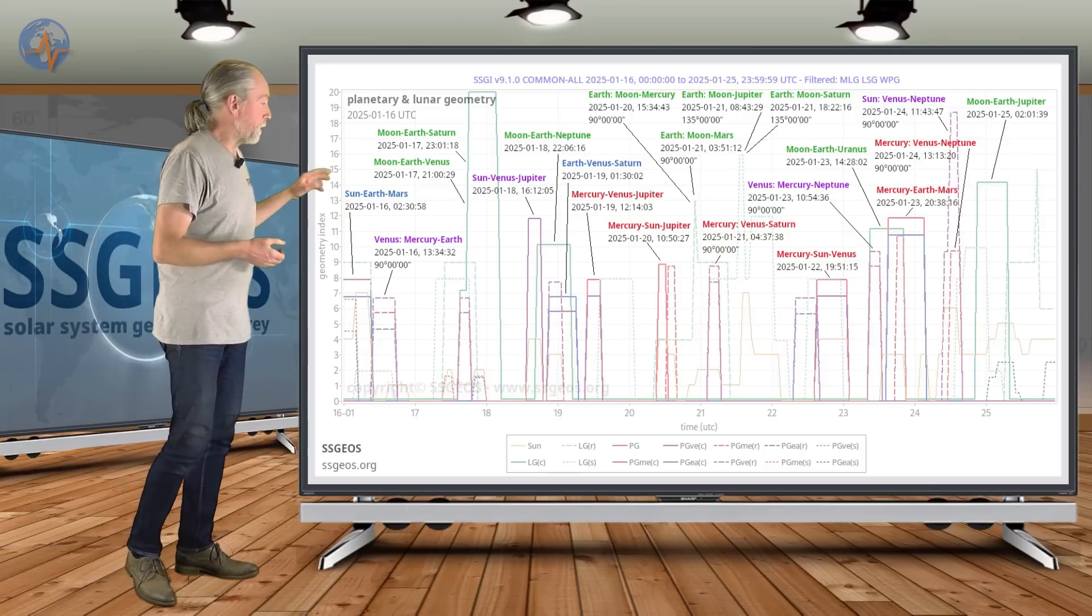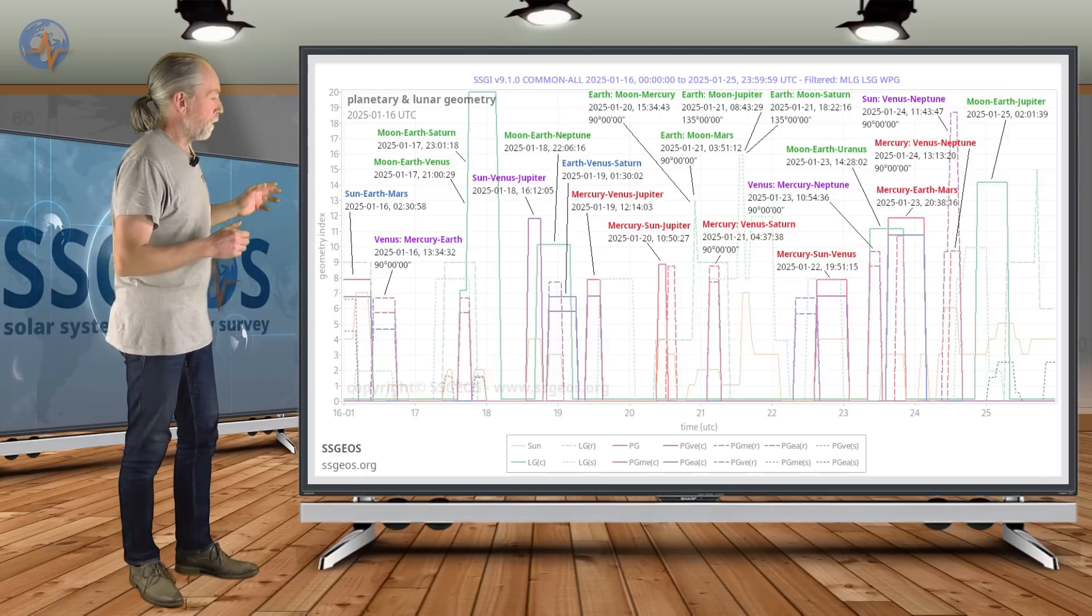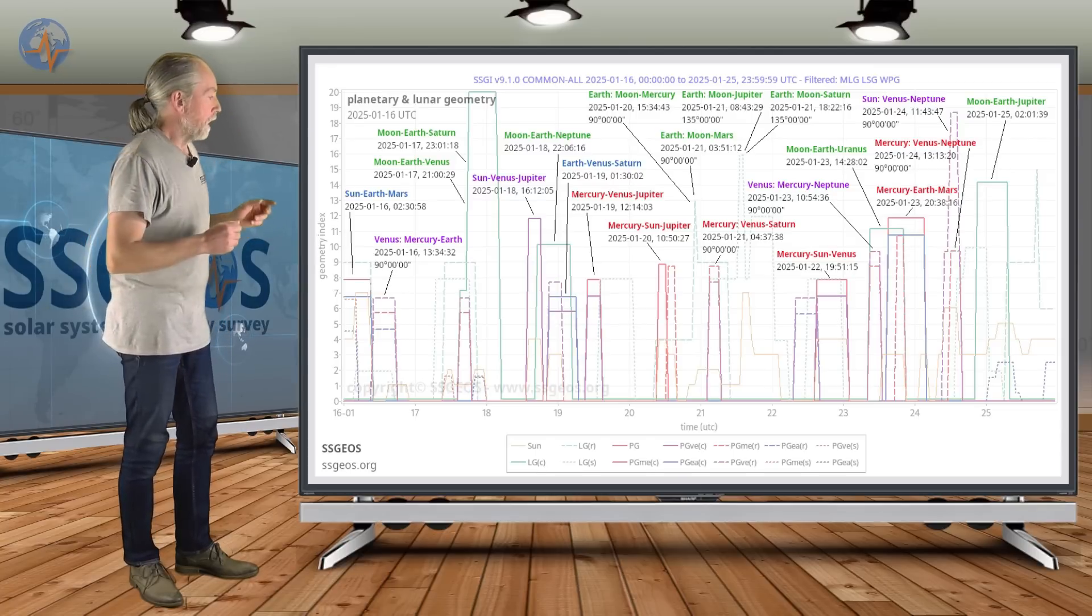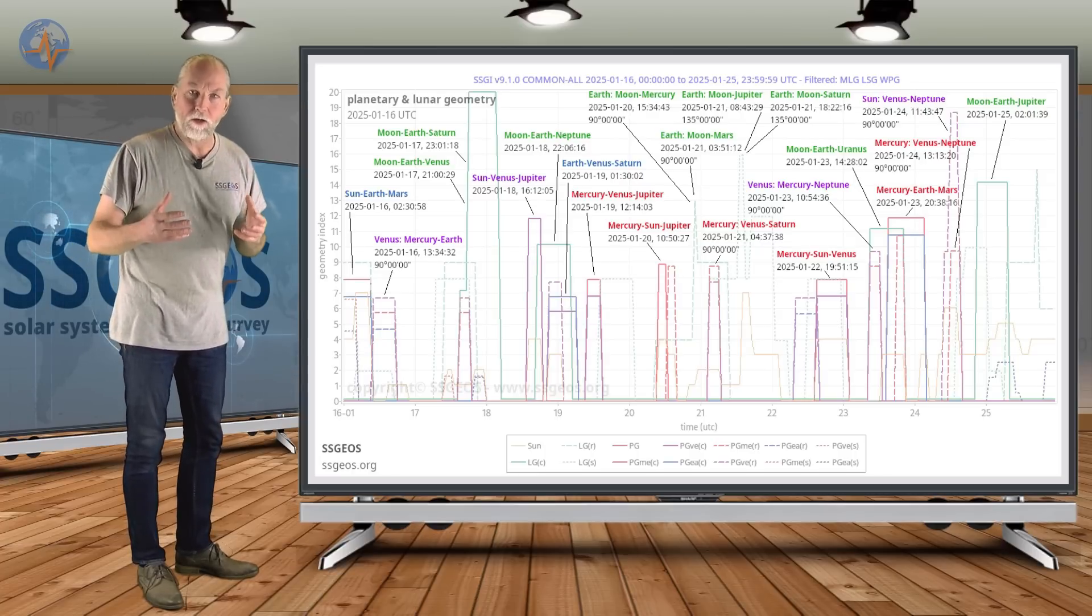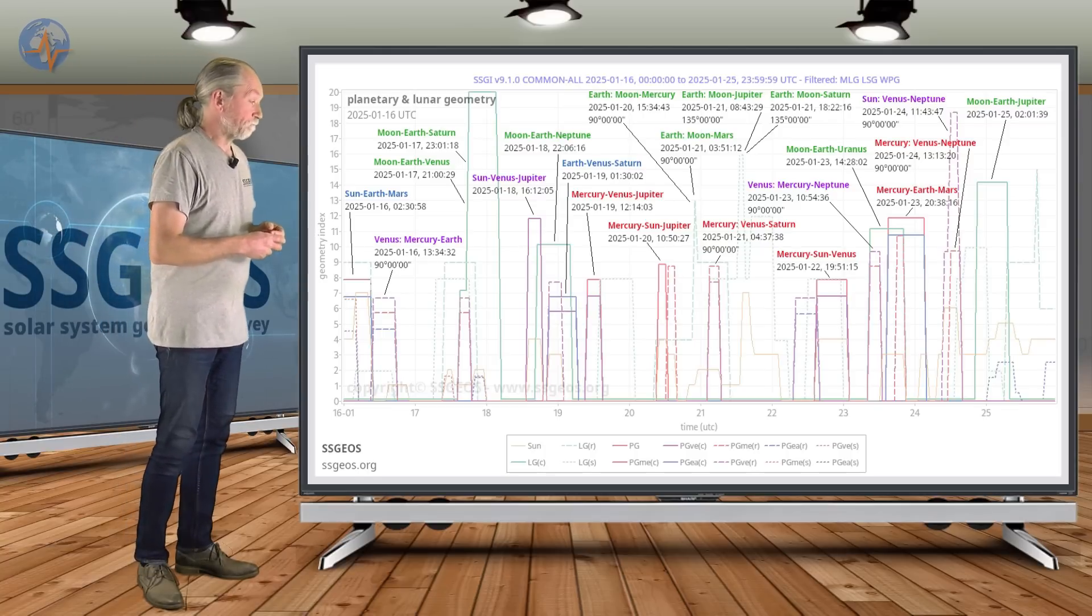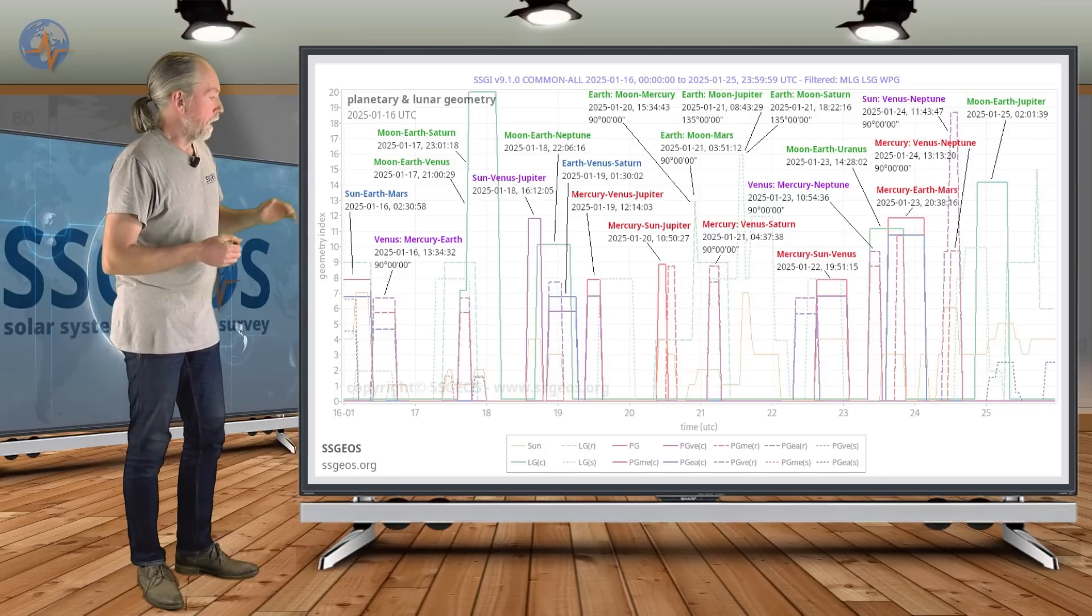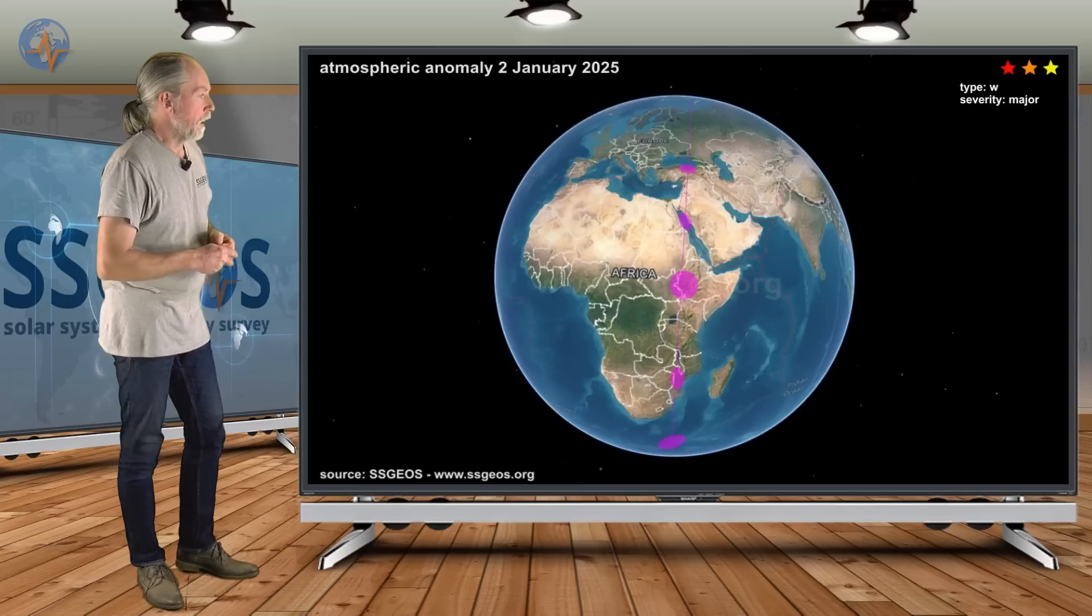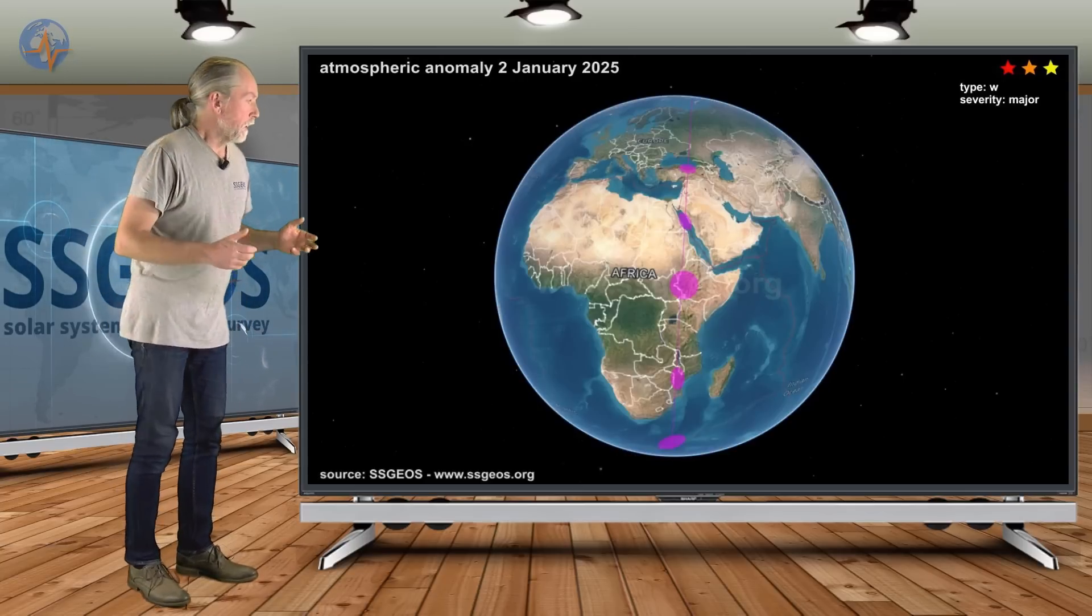It could already be following the geometry on the 19th. There's the convergence there. But I think that the most critical geometry will be the convergence on the 23rd and 24th. Also because there is right angle geometry with Venus and Mercury involved. And I think that the large seismic response is probably going to be following the geometry on 23, 24 and 25 January. If we look at the atmospheric anomalies that we recorded this month so far,